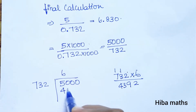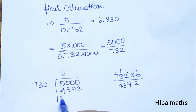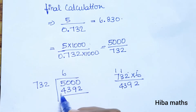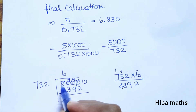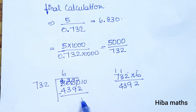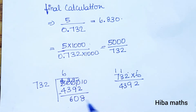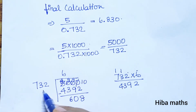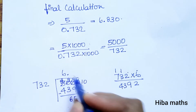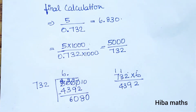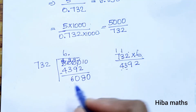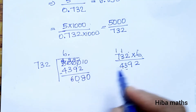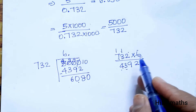6 times: 6×2 is 12, carry 1. 6×3 is 18, plus 1 is 19. 6×7 is 42, plus 1 is 43. Balance: subtract 4392 from 5000. Now this is 700, now this is 600, so we add 0 after the decimal point.